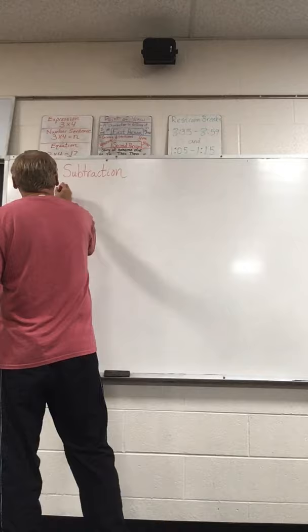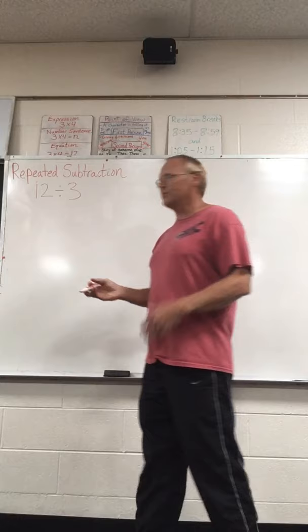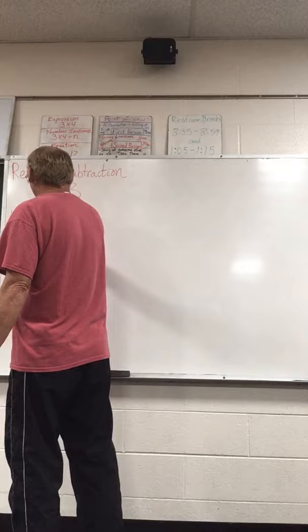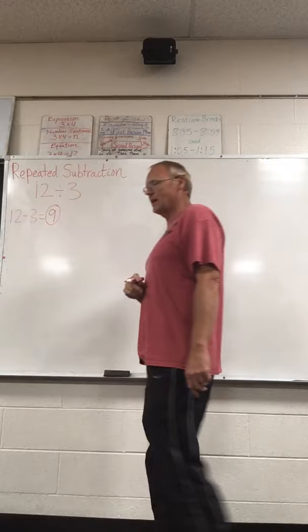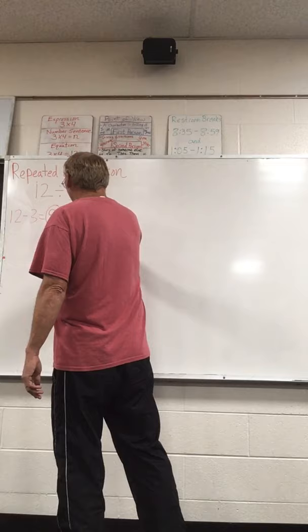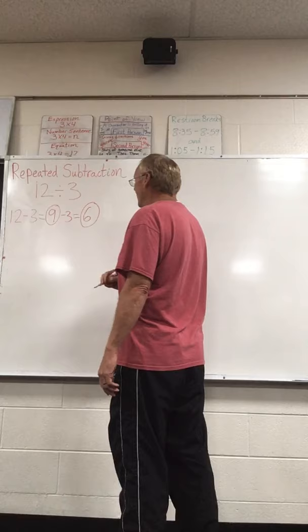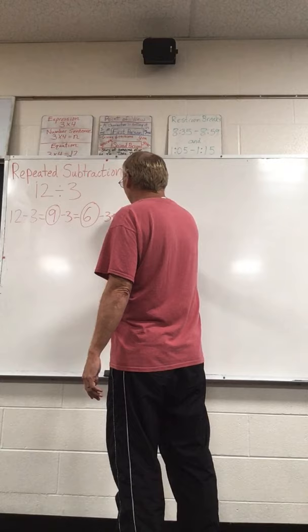Let's try another one — 12 divided by 3. So we start with 12 and just keep subtracting 3s. So 12 minus 3 equals — you can count down from 12, whatever works for you — you get to 9, circle it. That's 1 subtraction. We're not to 0 yet, so we subtract 3: 9 minus 3 equals 6. We're not to 0 yet, so we subtract 3 again — that equals 3.